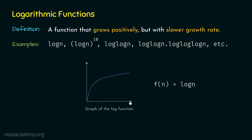As the size of the input increases, the growth rate of this function is logarithmic — it grows positively but with a slower growth rate. We can represent this as f(n) where n is the size of the input and f(n) = log n.